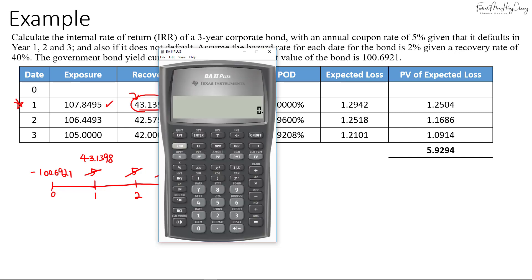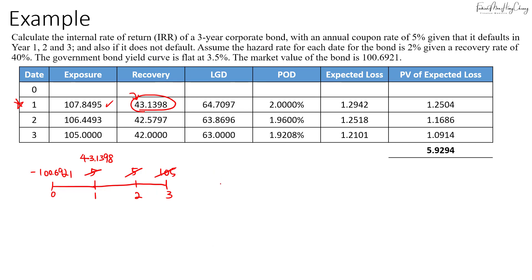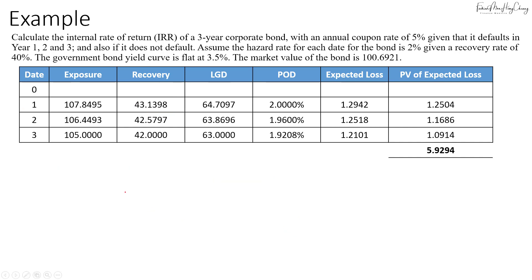Using the financial calculator, clear the TVM. Your PV is negative one hundred point six nine two one, FV is forty-three point one three nine eight, PMT is zero, and N equals one since it defaults in the first year. Computing I/Y gives a negative IRR of fifty-seven point one five six seven percent. In equation form: one hundred point six nine two one equals forty-three point one three nine eight discounted at the IRR to the power of one, giving IRR of negative fifty-seven point one five six seven percent.